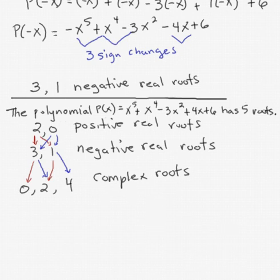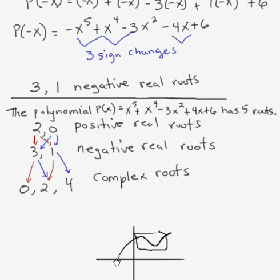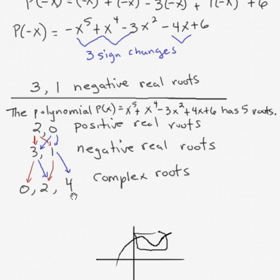Why do we want to know these things? When we look at graphs, if my graph crosses the x-axis, that corresponds to a real root. Since I'm guaranteed 1 negative real root, somewhere to the left of the y-axis my graph crosses the x-axis once. For complex roots, there's some change in direction in the curve — going toward a maximum, dropping toward a minimum, and turning around — that's an indication of a complex root. It's possible with 2 or 4 complex roots. That's our Swiss Army knife of theorems for solving polynomials.